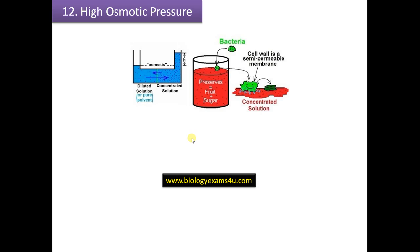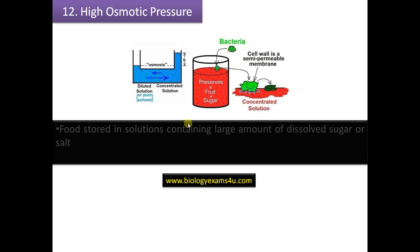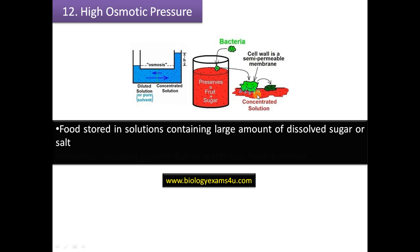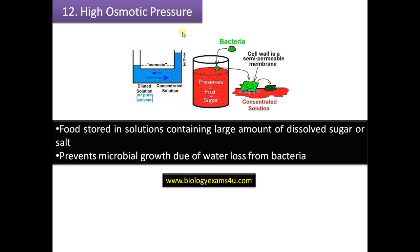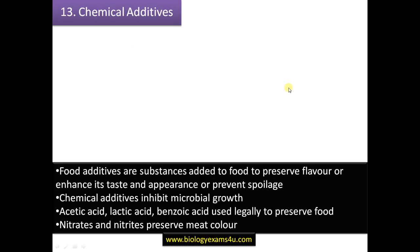High osmotic pressure preservation is similar to salting and sugar preservation. When food is kept in a highly concentrated sugar or salt solution, osmosis causes water to leave the microbial cells, resulting in cell lysis. Microbes cannot grow in such highly concentrated solutions, so foodstuffs can be kept safe in high-concentration salt or sugar solutions.